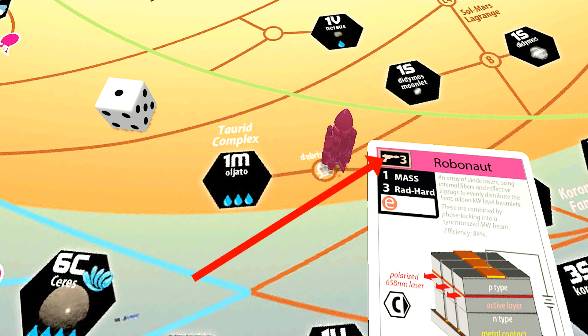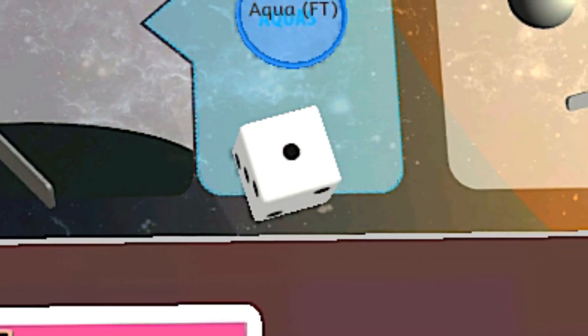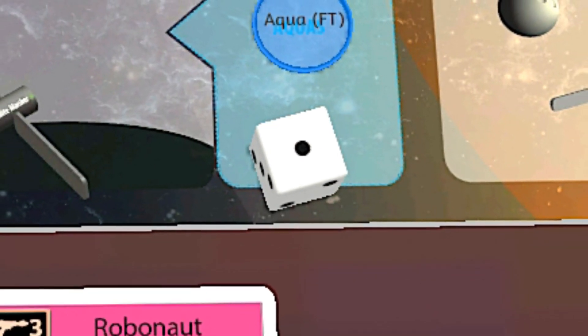In fact, I can prospect any adjacent eligible space, even multiple sites with a single operation. Each prospect operation is a glitch roll, so I roll the dice to see if anything malfunctions.